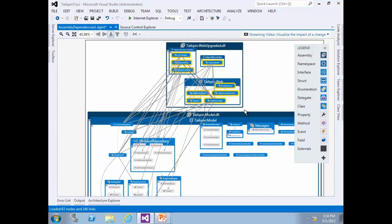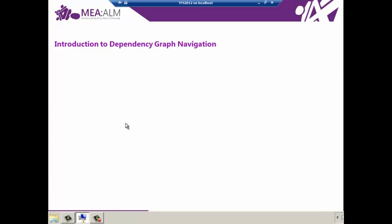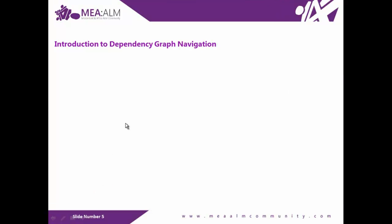This is the end of Exercise 1. We have now learned how to generate a dependency graph for the entire solution or for a specific piece of information we need. In Exercise 2, Introduction to Dependency Graph Navigation, you will learn more about how to manipulate and navigate dependency graphs.